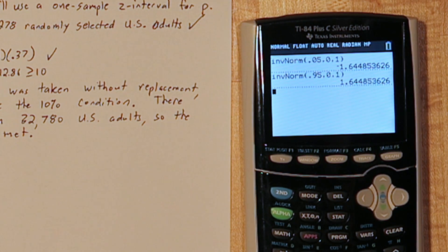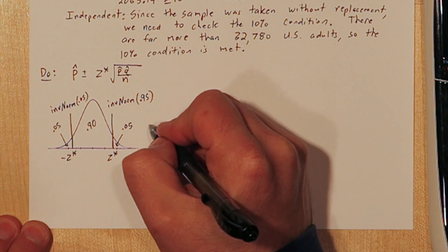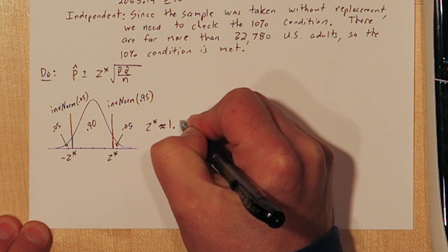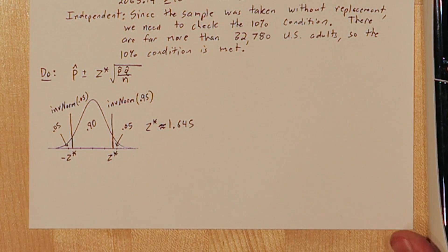Our critical value for a 90% confidence interval is approximately 1.645. Now let's build our confidence interval.